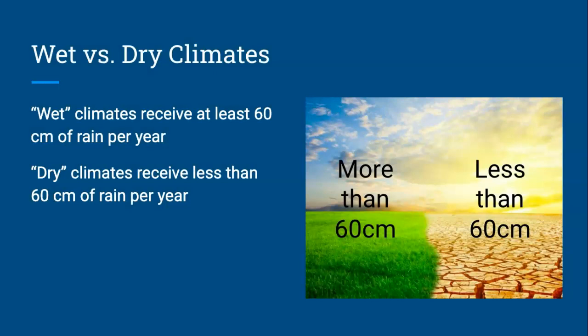Now, for the rest of this unit, you may hear me refer to wet and dry climates. And this is not necessarily a scientific term. For our sake, we're going to say that wet climates receive at least 60 centimeters of rain. So, 60 centimeters or more of precipitation. While dry climates will receive less than 60 centimeters of rain. So again, 59 centimeters or fewer of precipitation.